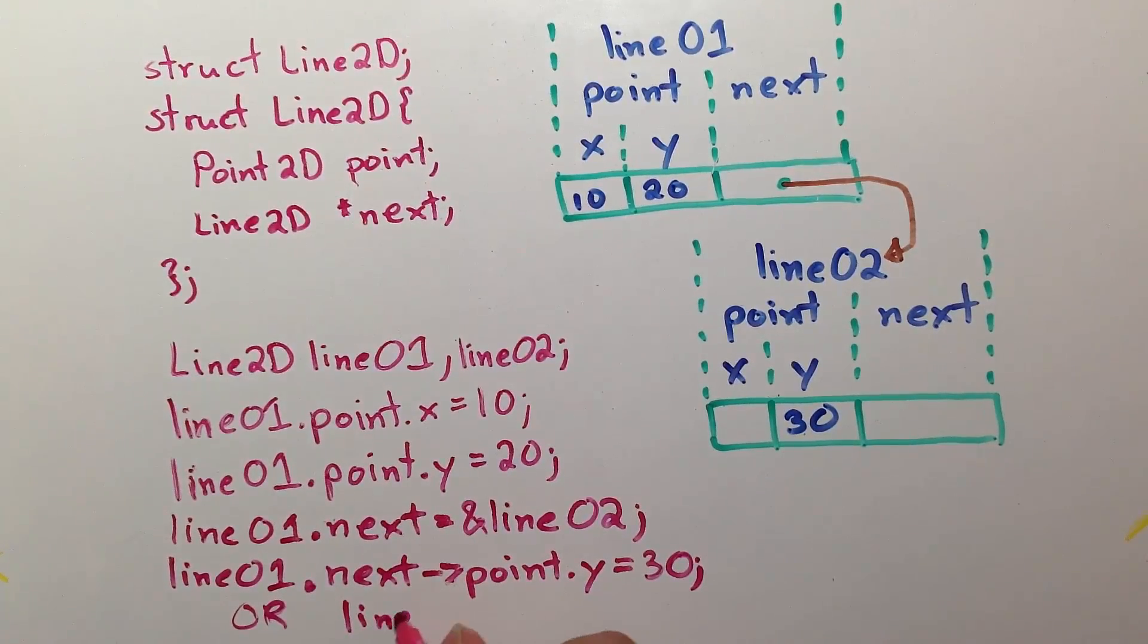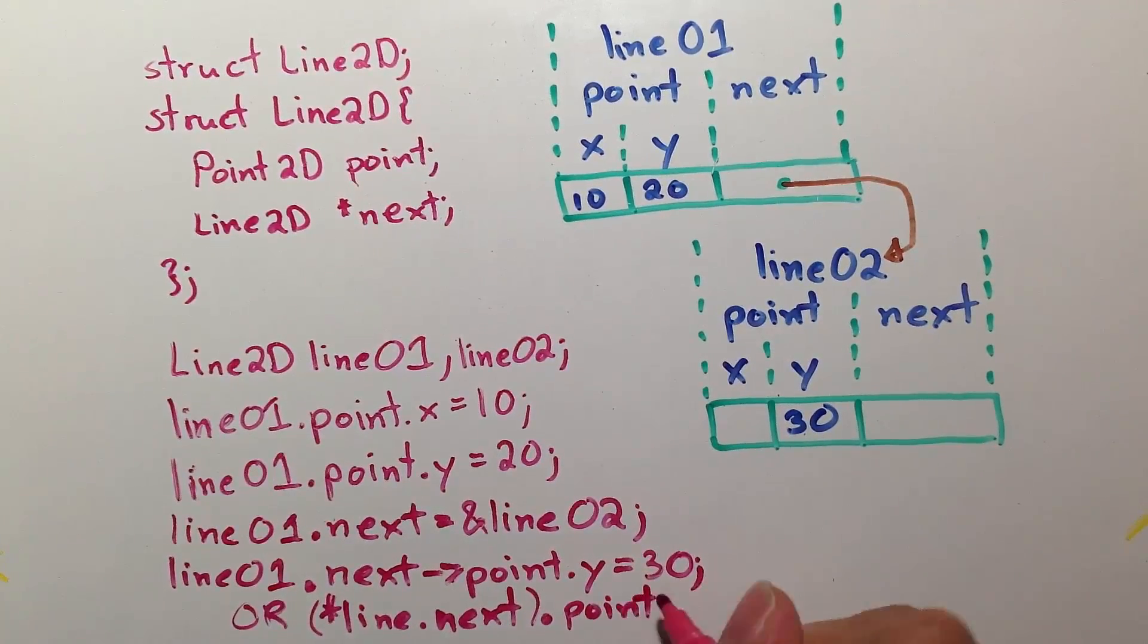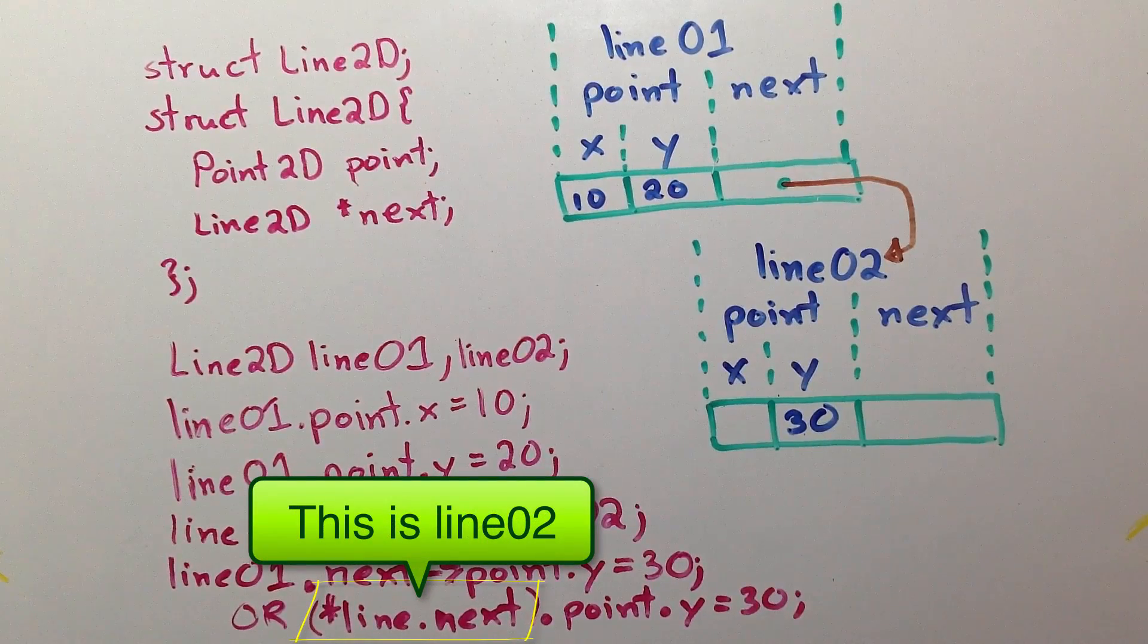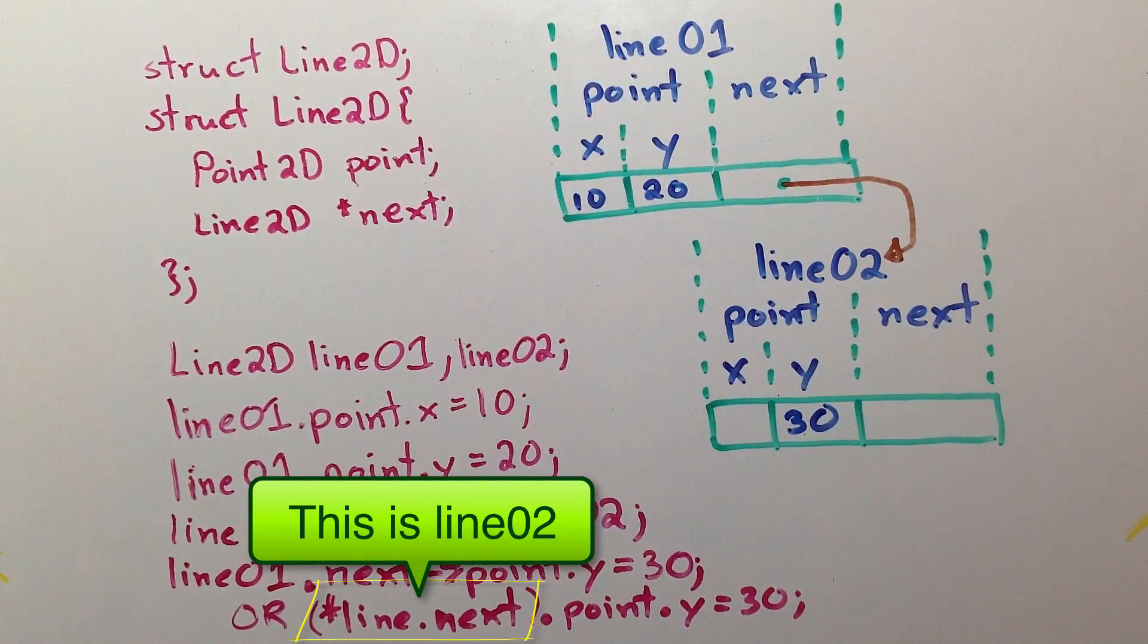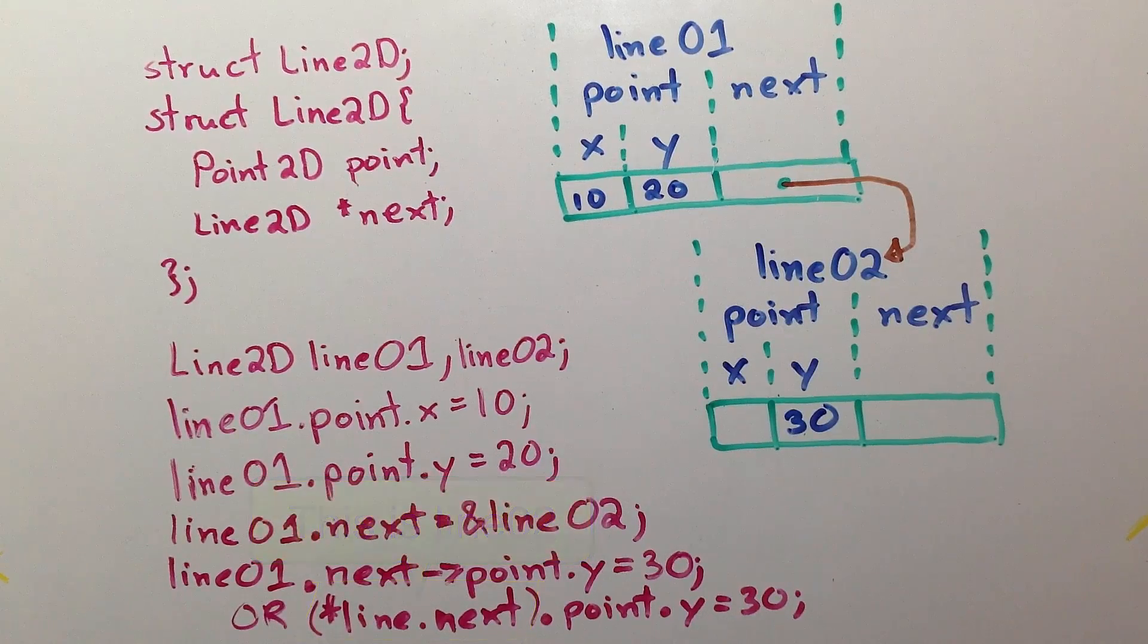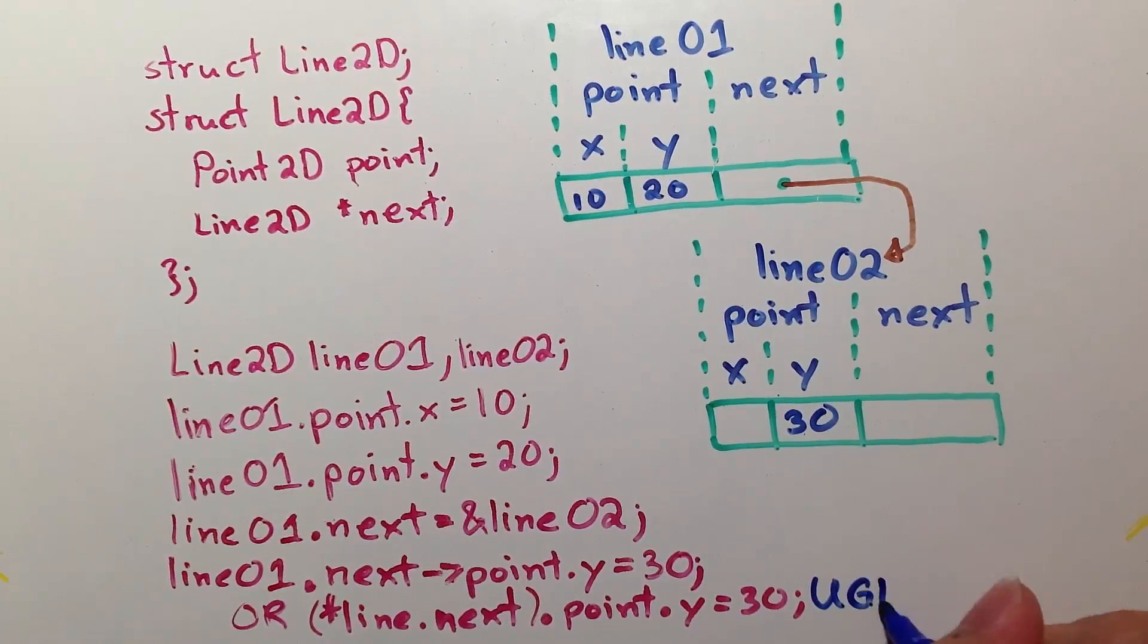We start with line01 dot next, dereference the whole thing, which is equivalent to line02. Get its child point, then child y, and give it 30. Dereferencing while accessing its children is very confusing since we don't read it from left to right. Thus, I call it the ugly form. Let's get rid of that.